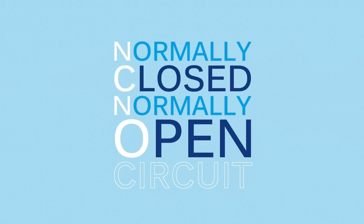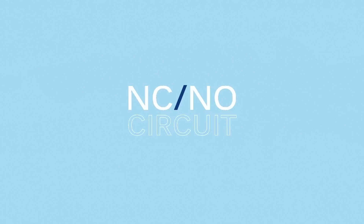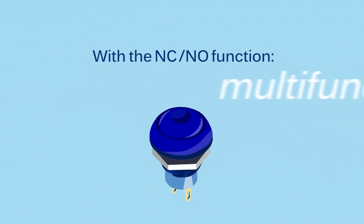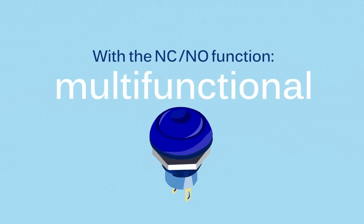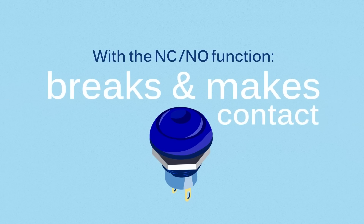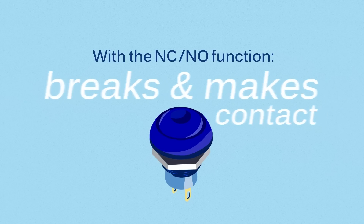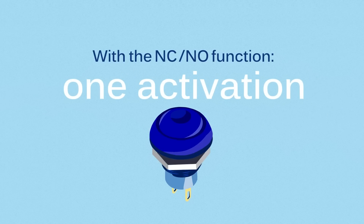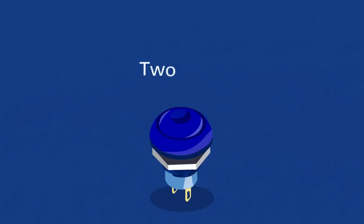Normally closed, normally open circuit. The switch becomes multi-functional with one or two inputs and two outputs. The switch breaks a contact and makes a contact with one activation. There are two main reasons to choose this multi-functionality.